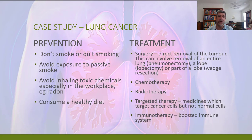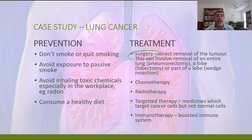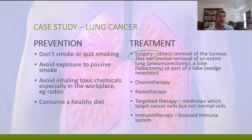If we do get lung cancer, we have to treat it. Surgery is one potential way — we can remove the whole tumour, which might involve removing the entire lung (a pneumonectomy), just one lobe of the lung (a lobectomy), or even a small part of one of those lobes such as in a wedge resection. Lung cancer being a type of cancer, chemotherapy, radiotherapy, targeted therapies targeting specific cells, or immunotherapy that helps boost the immune response, can all be treatments to help a patient who has contracted lung cancer.